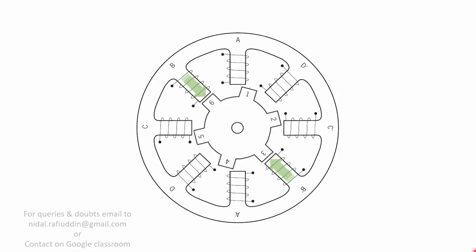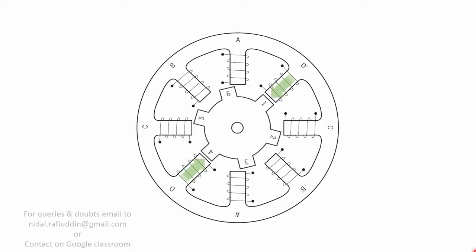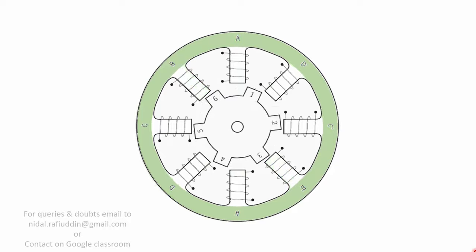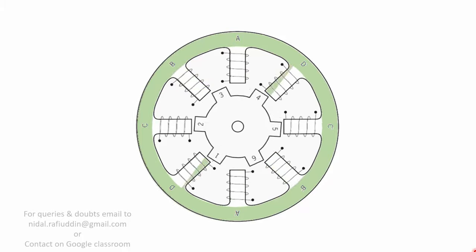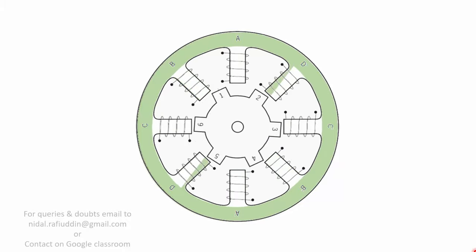If the pulse is removed from A and applied to B, the rotor moves 15 degrees clockwise so that a tooth is aligned with B. Then if power is removed from B and applied to C, the shaft rotates a further 15 degrees clockwise. Thus applying pulses in the sequence A, B, C, D, A, B, C... results in clockwise rotation of the shaft in 15-degree increments. Reversing the switching sequence to A, D, C, B, A reverses the direction of rotation. The VRSM can be single-stack or multiple-stack type; multiple stack provides smaller step sizes.